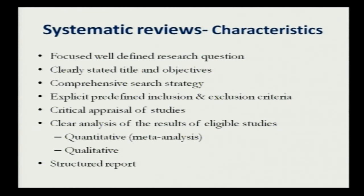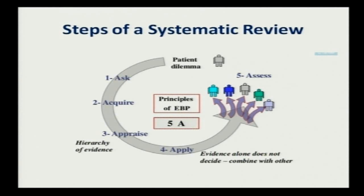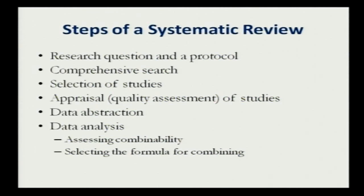A systematic review focuses on a well-defined research question, clearly states the titles and objectives of the review, involves a comprehensive literature search, explicit definition of inclusion and exclusion criteria, critical appraisal of studies, a clear analysis of results of eligible studies, and a structured report. The five principles — ask, acquire, appraise, apply, and access — are components of evidence-based medicine. Since systematic reviews form the tip of evidence-based medicine, they must follow these principles most diligently.